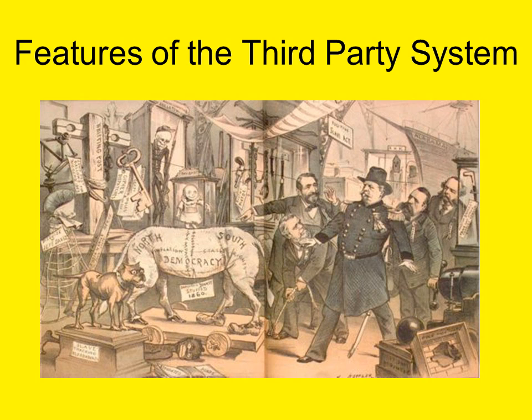Support for the Pendleton Act ultimately cost Republican President Chester A. Arthur a shot at re-election to the presidency in 1884. Republican machine bosses were so angry at what they viewed as Arthur's treachery to the party that they worked against him at the 1884 Republican nominating convention — the sitting president was denied renomination.